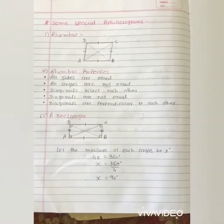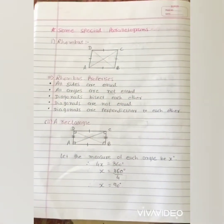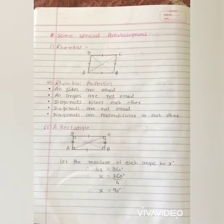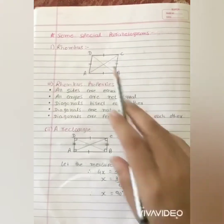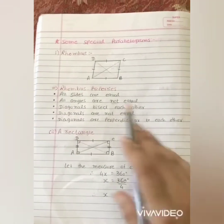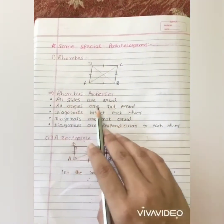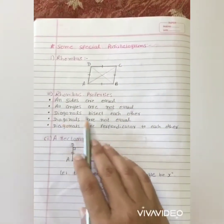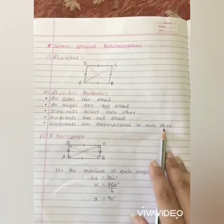Last topic of this chapter: some special parallelograms. First we discuss the rhombus. The speciality of a rhombus is that it has equal sides but not equal angles. Rhombus properties: all sides are equal, all angles are not equal, diagonals bisect each other, diagonals are not equal, and diagonals are perpendicular to each other.